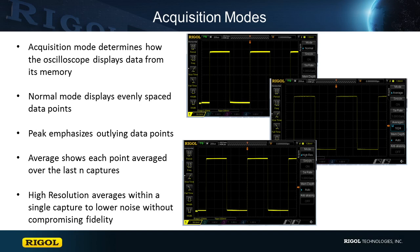Regal Scopes provide acquisition modes including Normal, Peak, Average, and High Resolution. When considering which mode to use, it is important to remember that modern scopes have a much higher sample rate than they usually display on the screen in many configurations. This is important to how some of the modes operate.